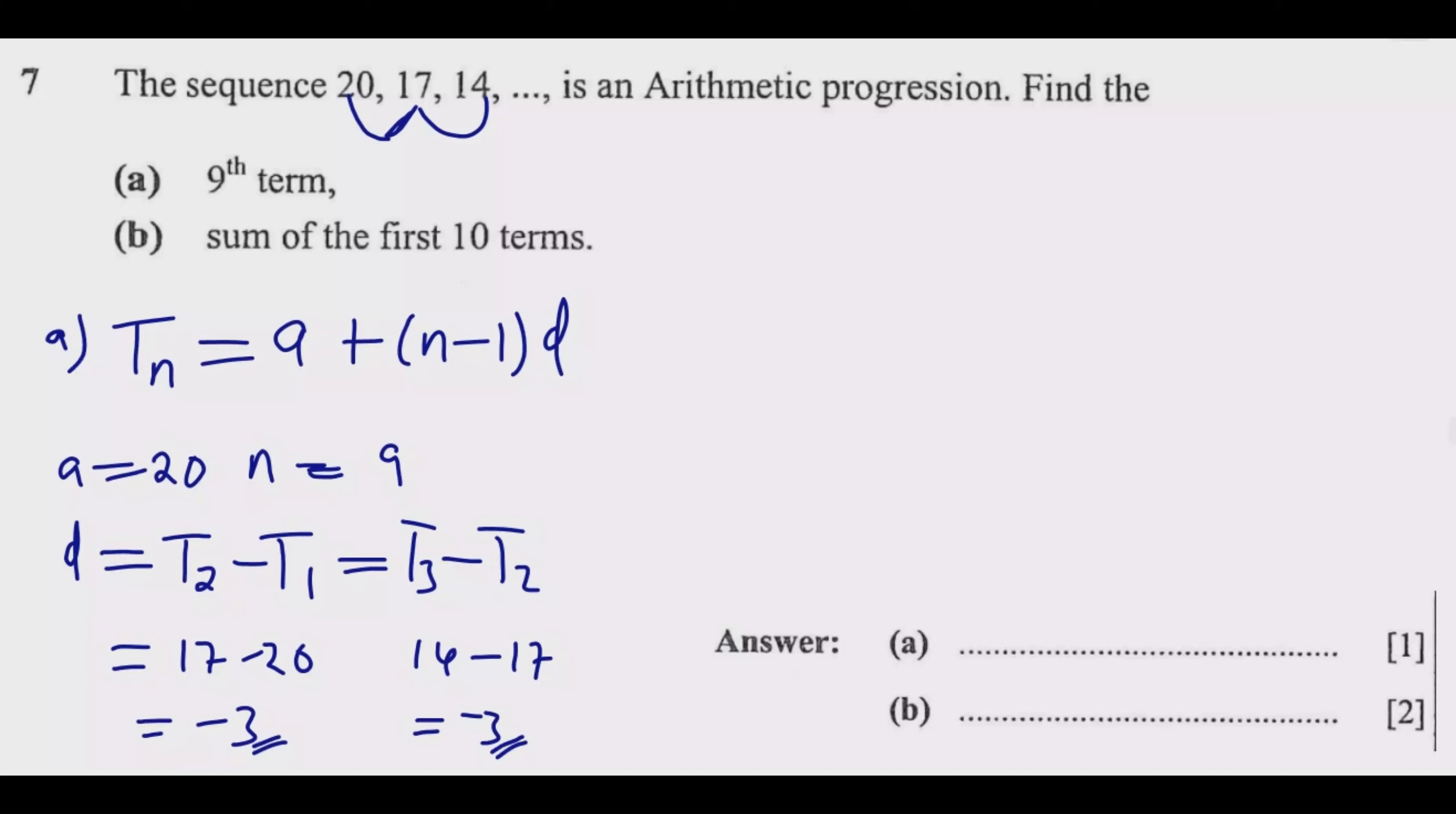That difference can be positive or negative. Positive means it's increasing, negative means the sequence is decreasing. In this case we're reducing from 20 to 14.